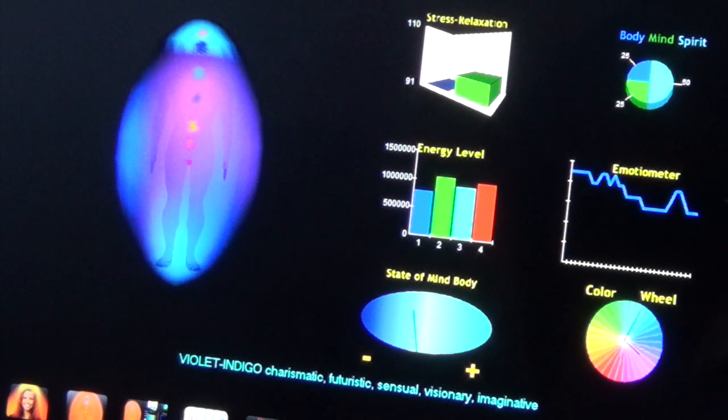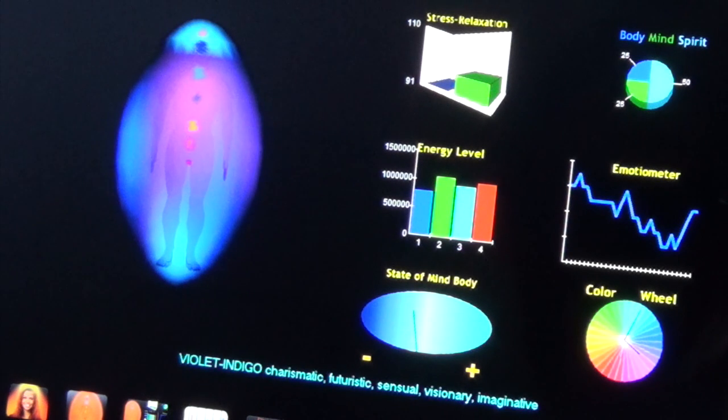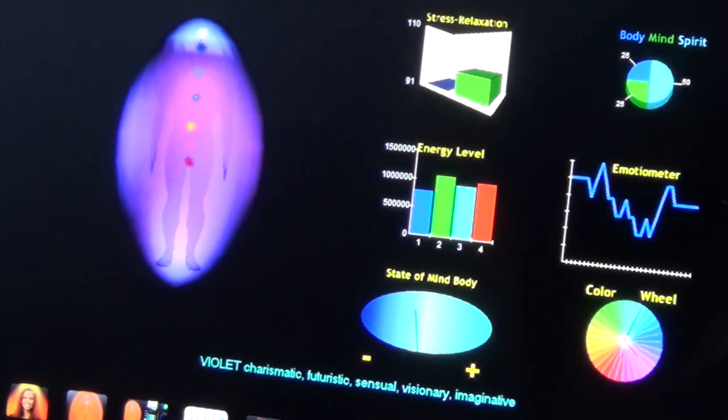As you can see, it's kind of pulsing. So it's picking up my thermal activity and the electrodermal activity, and they've written a program to translate that into what's going on within our chakras and the aura itself. You can see the emotion meter. It's pretty jagged there on the right.